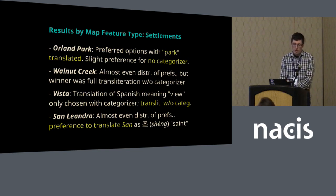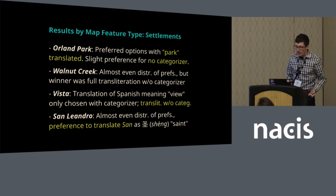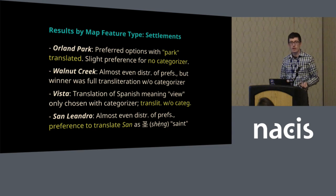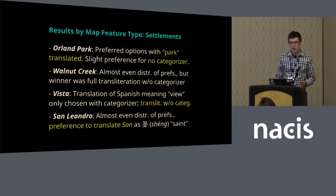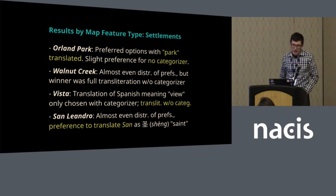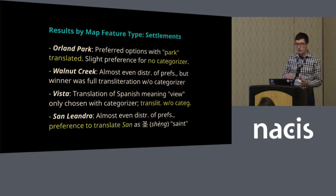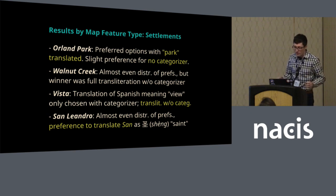With settlements, there was a general preference not to have a categorizer and a general preference for transliteration. With Orland Park, it's not a park — it's a town. With Walnut Creek, the creek is mostly underground. And vista is a Spanish word meaning view, but speakers would not choose the translated version because the meaning of view wasn't necessarily accessible, so speakers tended to prefer transliteration. In San Leandro, there was a preference for translating San as the word saint, probably an established convention given how common those types of names are in California.